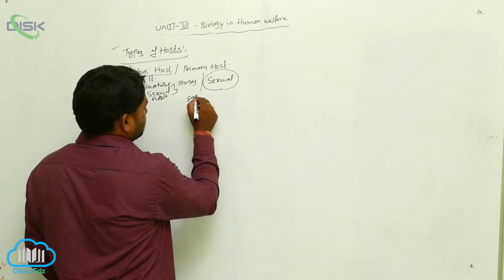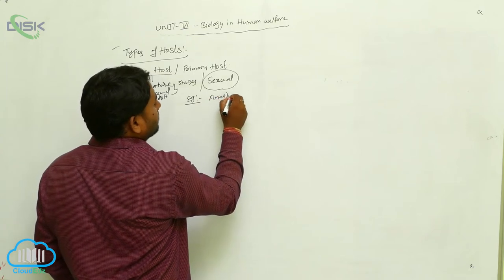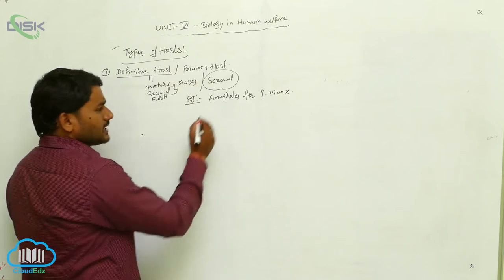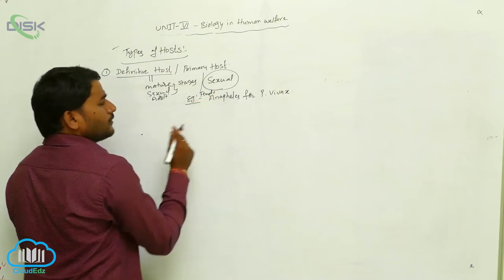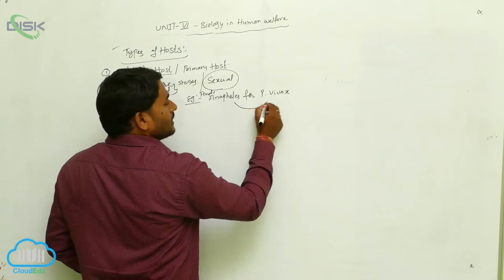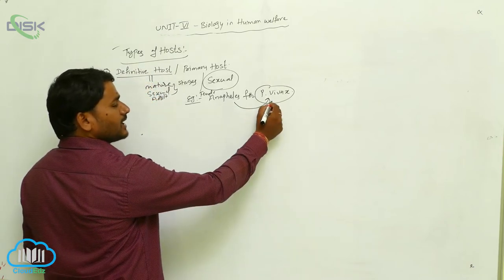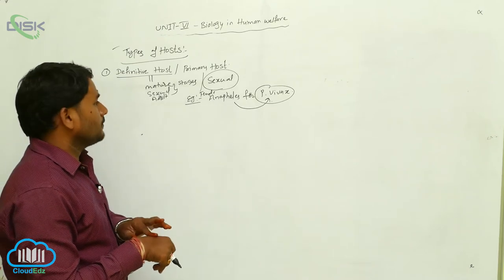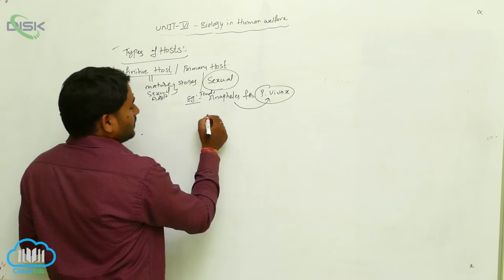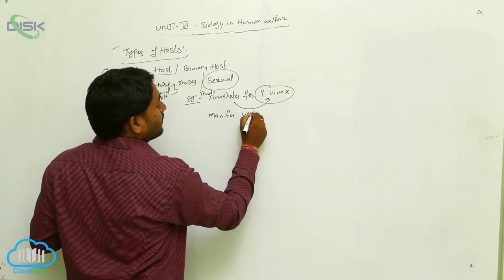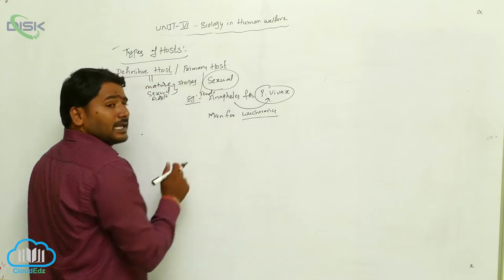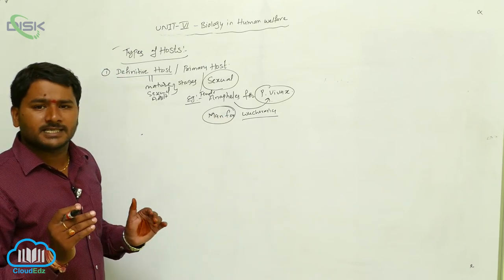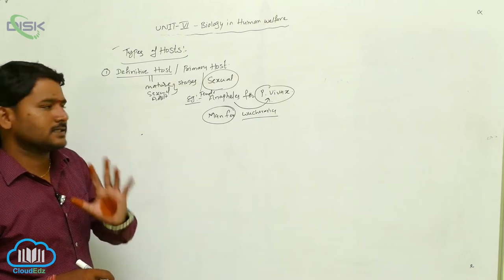For example, the female Anopheles mosquito is the definitive host for Plasmodium vivax, because Plasmodium vivax completes its sexual life cycle in the female Anopheles mosquito. Next, man is the definitive host for Wuchereria, because the Wuchereria parasite completes its sexual life cycle in man. So, the parasite completes its sexual life cycle in the primary host or definitive host.